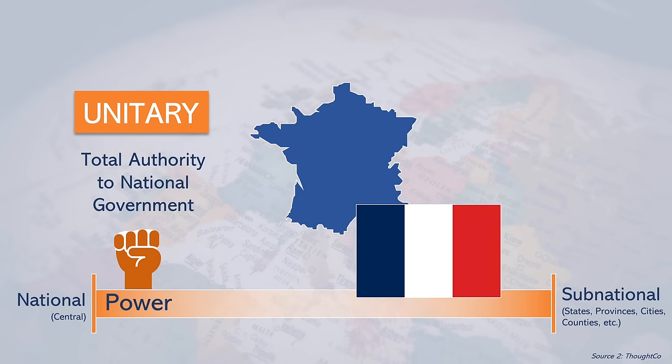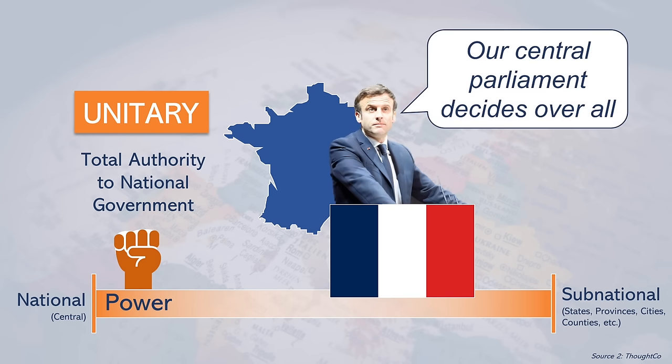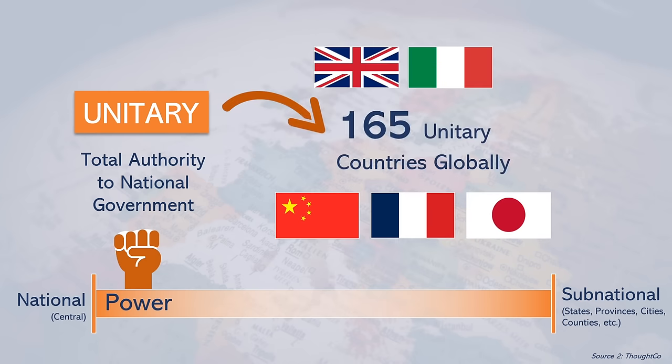France is a great example, as its central government has control of nearly 1,000 political subdivisions, which mainly exist to implement directives issued by the central government. Globally, there are 165 unitary states, making it the most common form of government in the world.